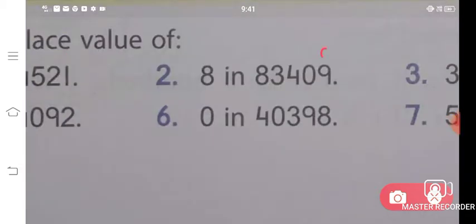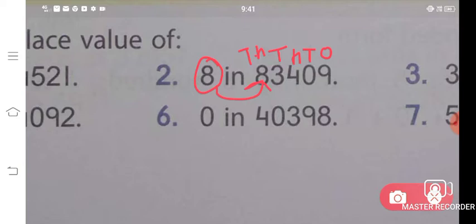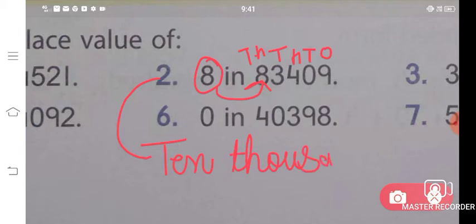Similarly, B part — write the place values: ones, tens, hundreds, thousands, and ten-thousands. The digit 8 is here. Which place is it? This is the ten-thousands place. So what will you write in the answer? Ten-thousands place — T-H-O-U-S-A-N-D-S, P-L-A-C-E. This is the answer for the second part.